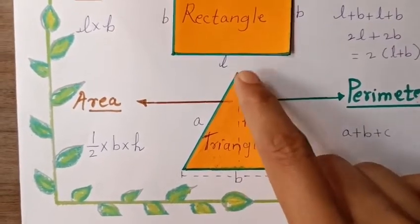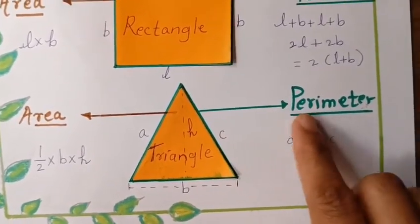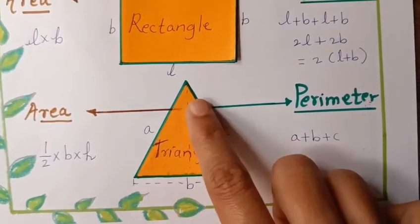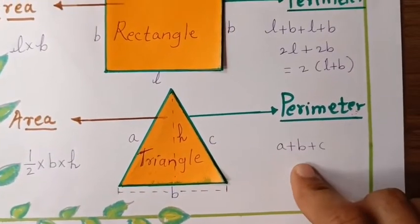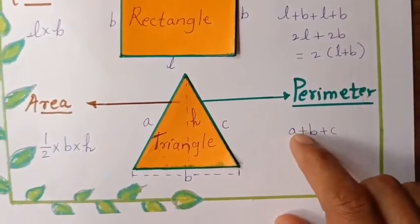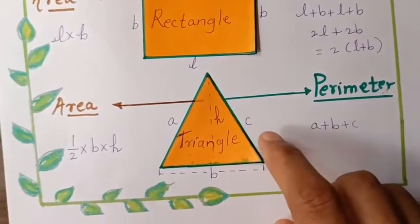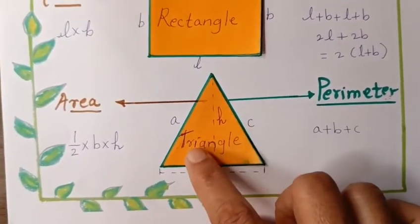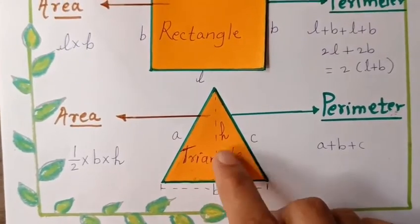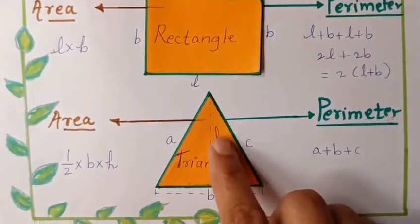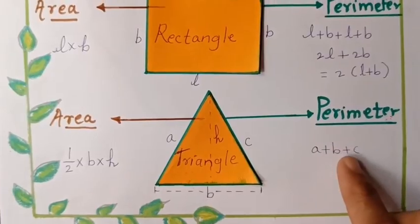Perimeter: three sides of the triangle border, that is a+b+c, is the formula of perimeter of triangle. a, b, and c—all three sides—a+b+c.